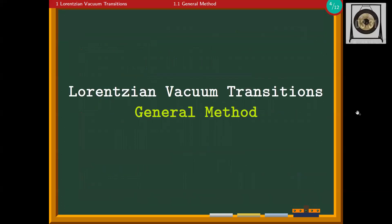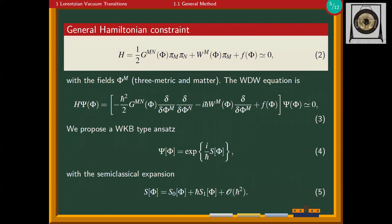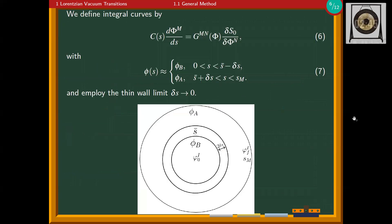Let me present the general method. We employ a general Hamiltonian constraint with squared momentum terms and linear momentum terms, and a general function f which contains the scalar field potential. We obtain the Wheeler-DeWitt equation by canonical quantization, then propose a WKB-type ansatz for the wave function of the universe. This S function has a semi-classical expansion: the first term is the classical action giving the semi-classical result, the second term is the first quantum correction, and so on — we consider up to the second quantum correction.